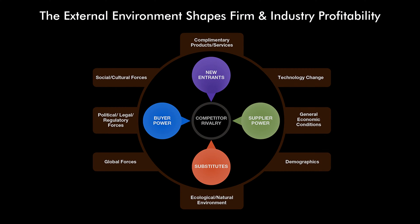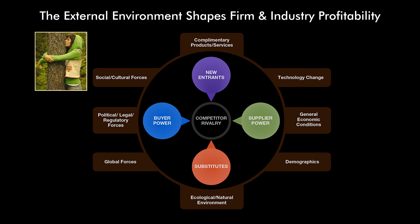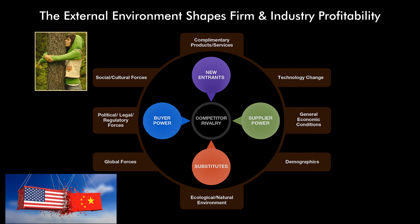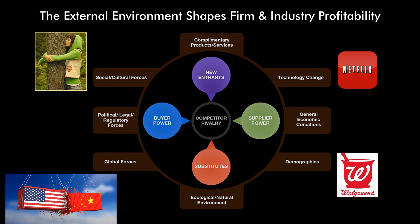The external environment shapes both firm and industry profitability in many ways: from complementary products and services, social and cultural forces such as customers' new desire for eco-friendly products, political, legal, and regulatory forces, global forces such as a trade war between the U.S. and China, ecological and natural environment, demographics — Walgreens can sell more drugs to an aging population — general economic conditions, or technological change like streaming upending the cable industry.